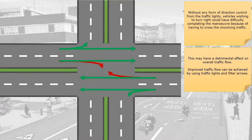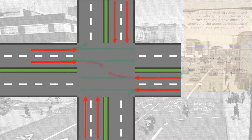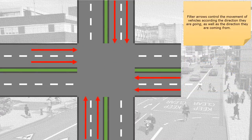Improved traffic flow can be achieved by using traffic lights and filter arrows. Filter arrows control the movement of vehicles according to the direction they are going, as well as the direction they are coming from.